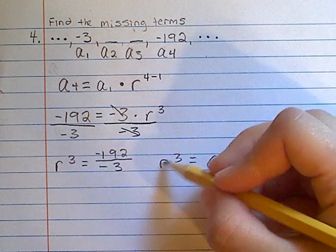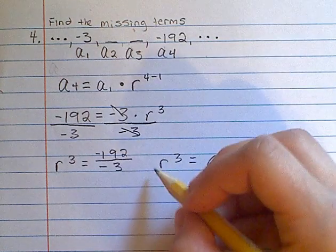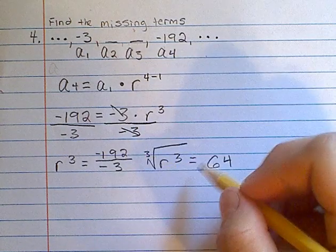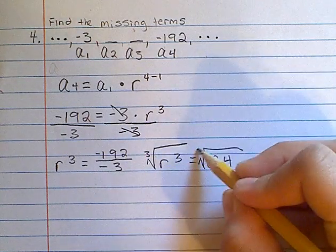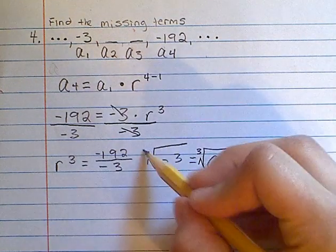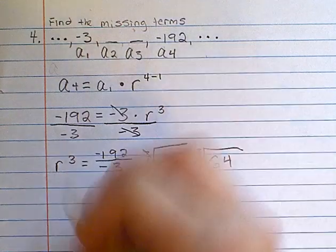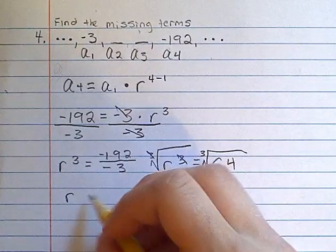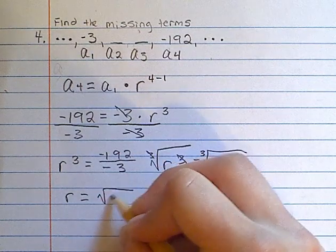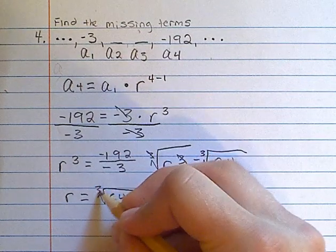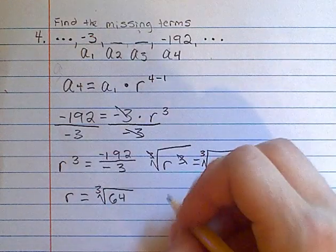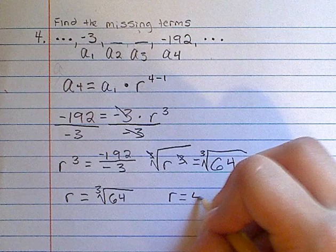So now to find r, we need to take the cube root of both sides. That will give us r is equal to the cube root of 64. Now when we solve this, we get r is equal to 4.